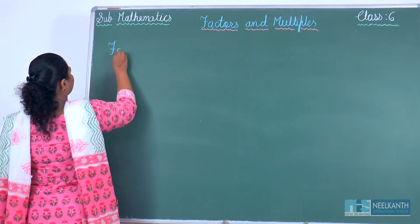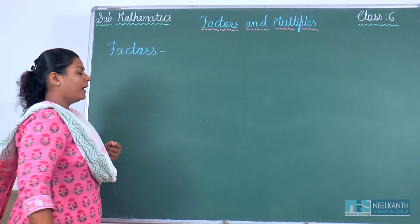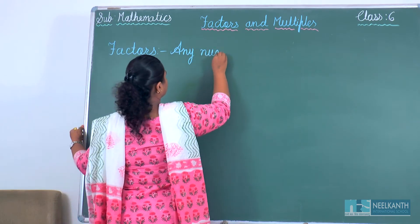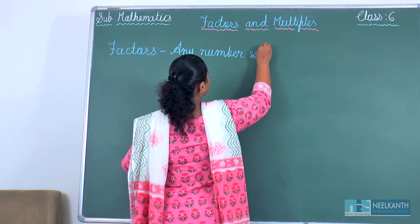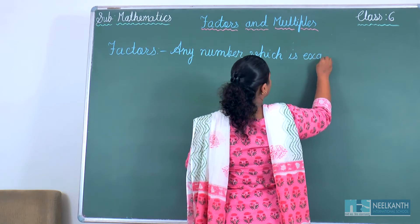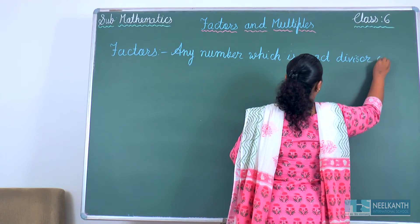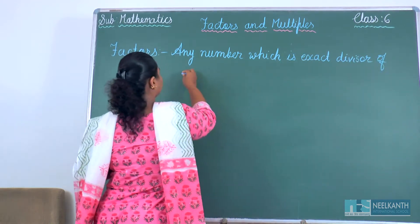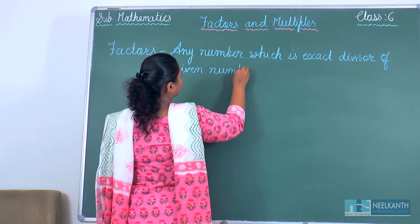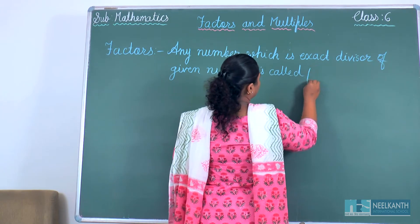What do we mean by factors? A number that divides another number exactly is called a factor of that number.